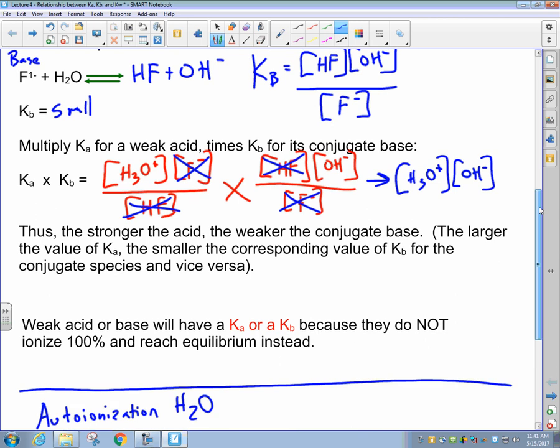So we're getting the Kw expression out of multiplying a Ka for a weak acid by the Kb, its conjugate base.